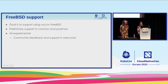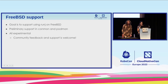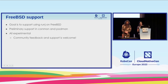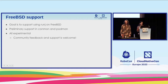FreeBSD is getting a lot of traction, so we are working on adding support for it. CRI-O has been mainly Linux-based, but that doesn't mean we can't support FreeBSD when there's demand. We're currently working on adding support using RunJ on FreeBSD. We've added some initial support in Podman and Conmon — our container monitoring tool — and we're working toward CRI-O support. This is all currently very experimental, and community feedback and support is very welcome.